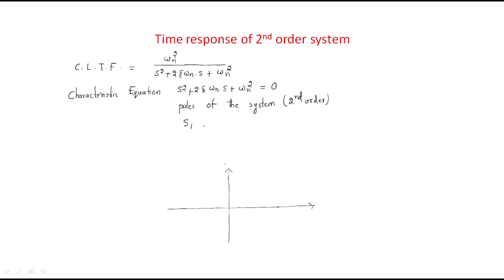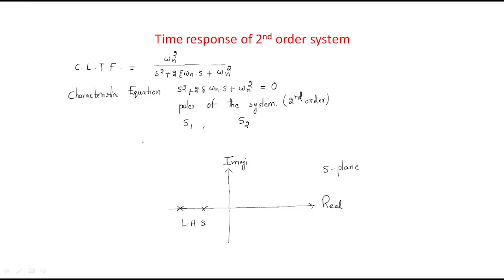We will find out two poles: the first pole s1 and the second pole s2. The placement of the poles will decide the system stability. In the s-plane, this axis is the real part and this is the imaginary part. If the two poles are available in the left half of the s-plane, for example s1 and s2 are here on the left, then the given system is a stable system.